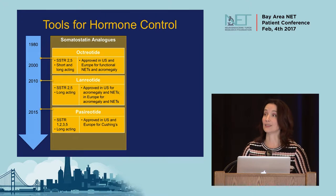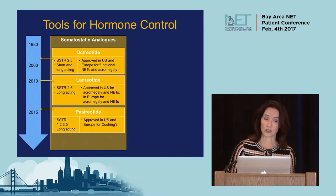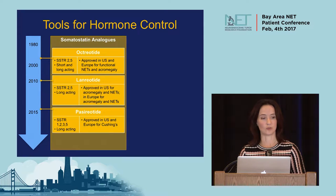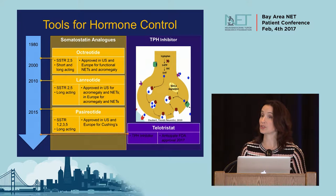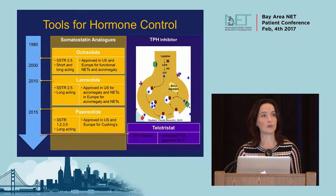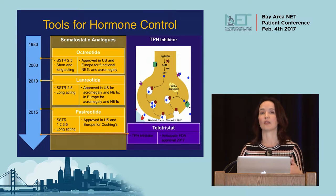They are administered differently: octreotide can be given in both a short-acting form and a long-acting intramuscular form, while lanreotide is given via deep subcutaneous injection. Pasreotide is the newest of the three; it is approved for Cushing's but not for carcinoid syndrome. The new option on the block — hopefully soon — is telotristat, which is a pill for carcinoid syndrome that actually blocks the enzyme that synthesizes serotonin, which can help reduce flushing and diarrhea.